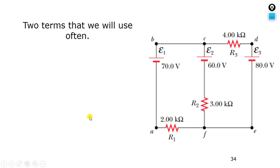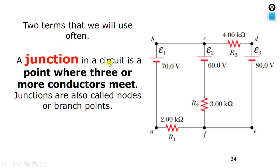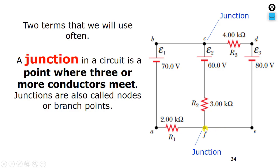There are two terms we will use often in Kirchhoff's rules. The first one is 'junction.' A junction in a circuit is a point where three or more conductors meet. Junctions are also called nodes or branch points. For example, in this circuit network with points labeled a, b, c, d, e, f — point c is a junction because three conductors meet there. Similarly, point f is a junction, but points a, e, b, and d are not junctions.